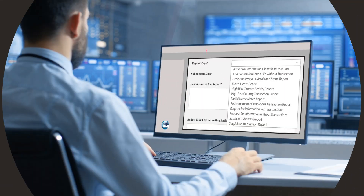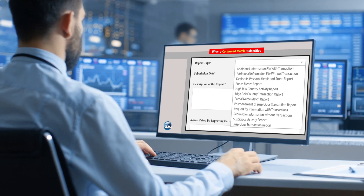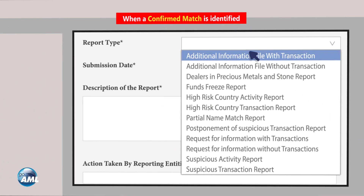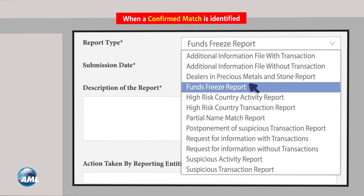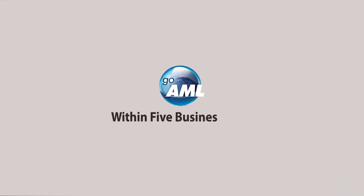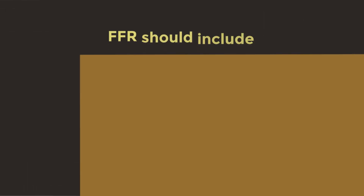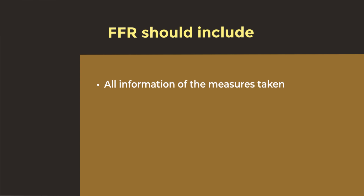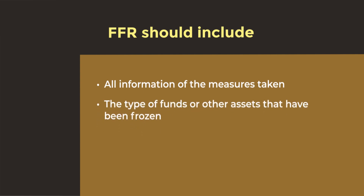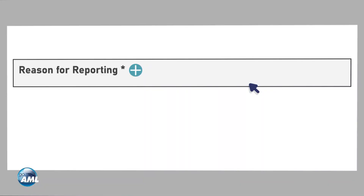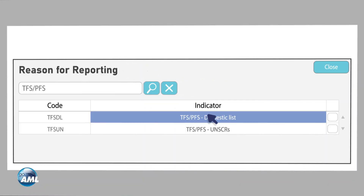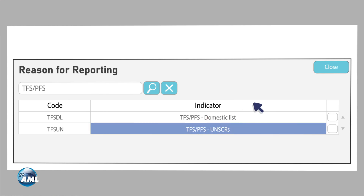Step 4: Report. When a confirmed match is identified, it is an obligation to report it by submitting a Fund Freeze Report, or FFR, through the GoAML platform within five business days. The FFR should include all the information of the measures taken, the type of funds or other assets that have been frozen, and any other relevant information. The report will be received simultaneously by the Executive Office for Control and Non-Proliferation and your supervisory authority.